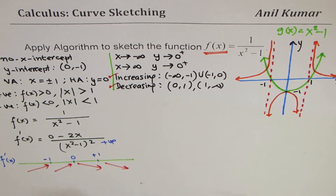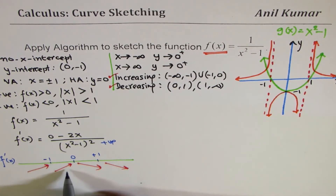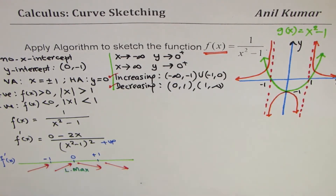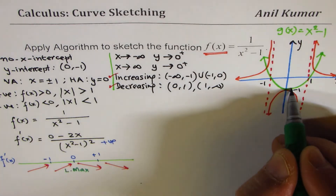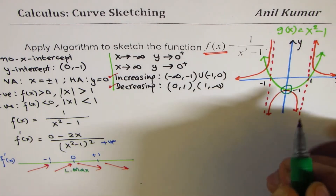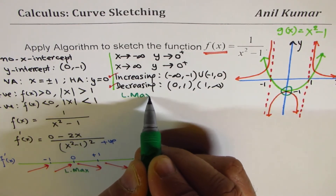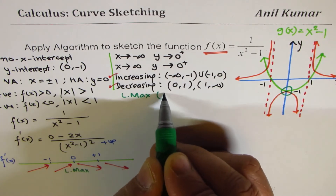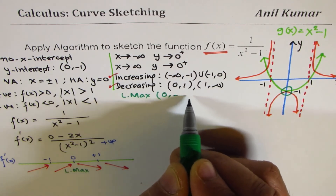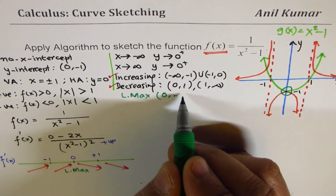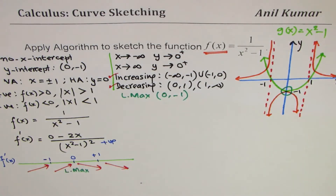From this sign analysis of the first derivative, we get a local maximum at x = 0, which corresponds to the point (0, −1).